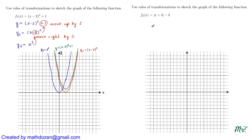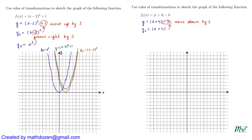Now for the second function: y = |x + 4| - 3. The minus 3 at the end is equivalent to moving the graph down by 3 units. The graph that should be moved down is y2 = |x + 4|. To go from y2 to y, we move y2 down by 3 units. The plus 4 added directly to x inside the absolute value is equivalent to moving the graph left by 4 units.